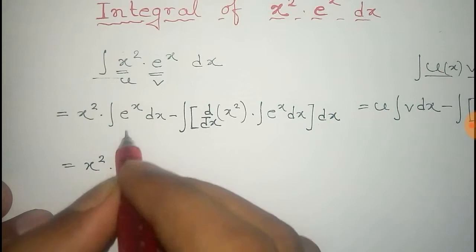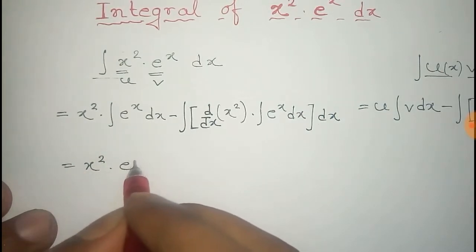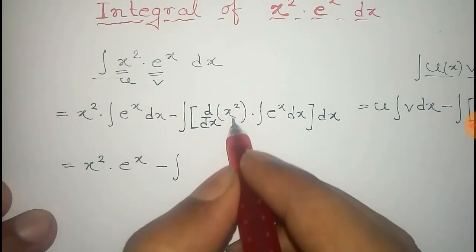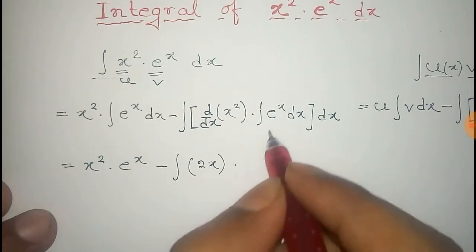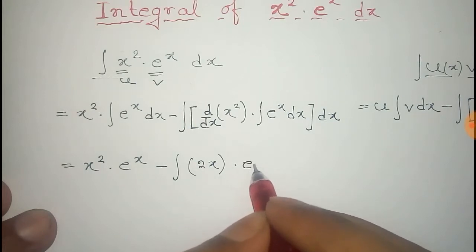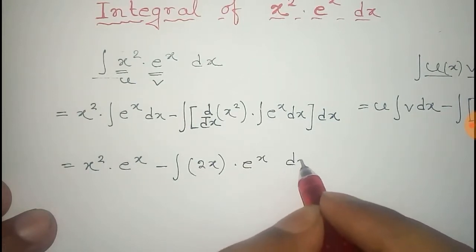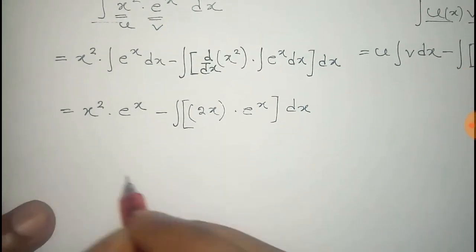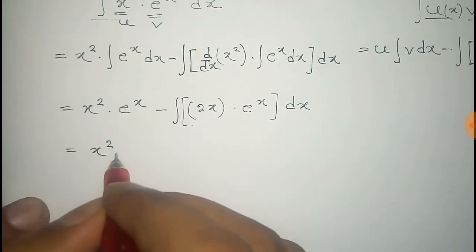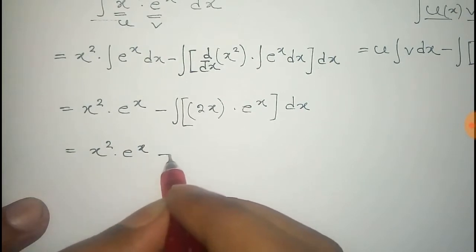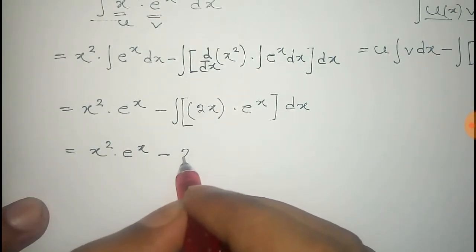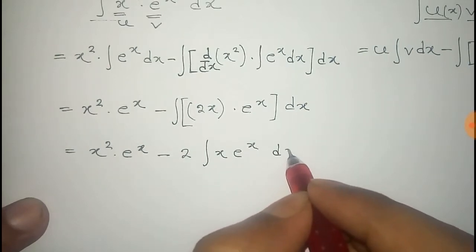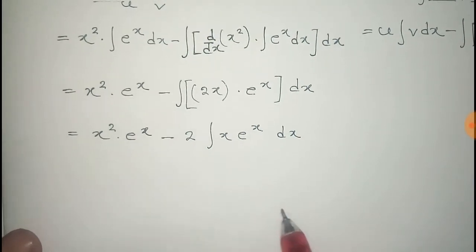That equals x squared into e to the power x, minus the total integral of the derivative of x squared, which is 2x, times the integral of e to the power x dx. So we get x squared e to the power x minus 2 times the integral of x e to the power x dx.